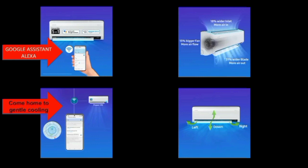This AC has wings that direct airflow up, down, left, and right. If you have any cooling need in the room, you can direct the airflow as needed.